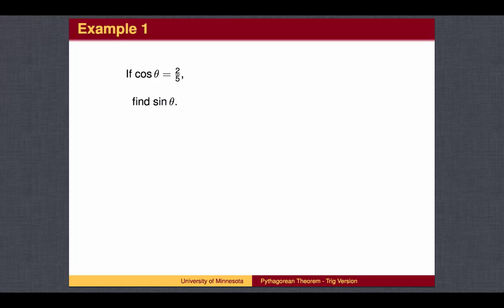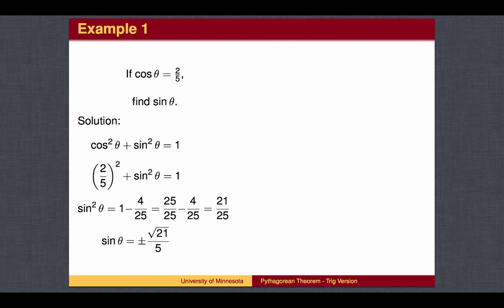For example, find the sine of theta if the cosine of theta is 2 fifths. We begin by using the Pythagorean Theorem to find that the square of the sine of theta is 21 over 25. We get two possible answers, one positive, one negative.